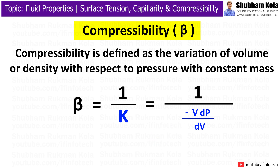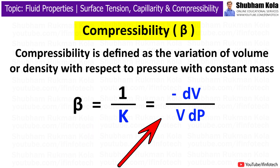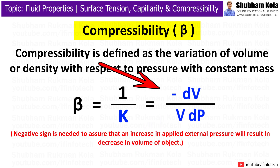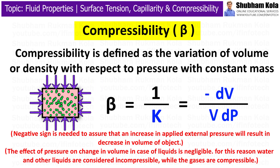Here, P is pressure and V is volume. Therefore, compressibility is equal to 1/K, and after simplifying, the formula for compressibility is: −dV / (V·dP). The negative sign is needed to ensure that an increase in applied external pressure results in a decrease in volume of the object. The effect of pressure or change in volume in the case of liquids is negligible. For this reason, water and other liquids are considered incompressible, while gases are compressible.